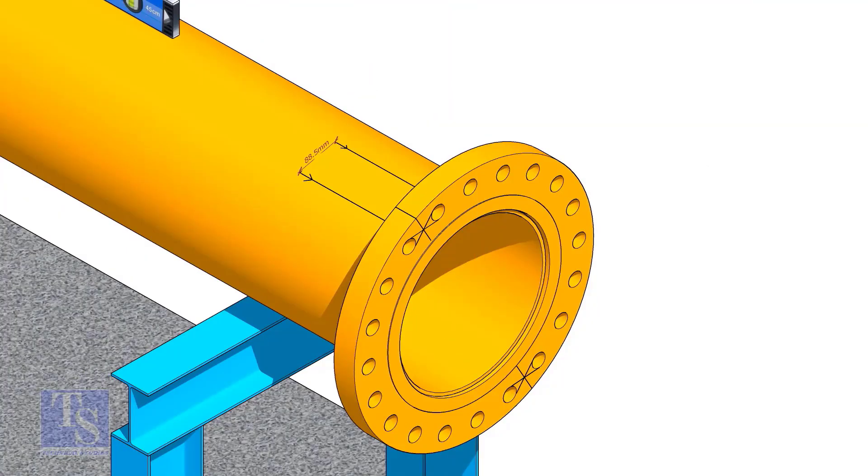Now, maintain the squareness of the opposite side and tack weld on both sides.